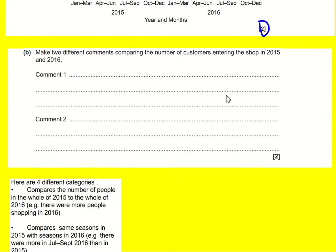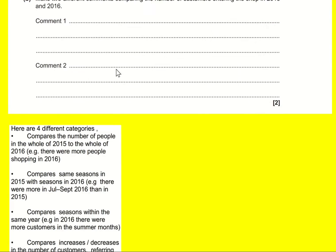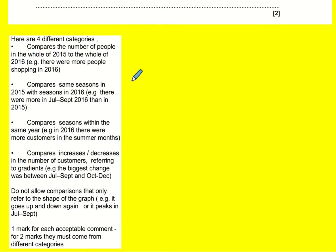And January to March is the lowest in both cases. From the mark scheme, you can compare the total number in the whole of 2015 to the whole of 2016 — more people in 2016. You can compare the seasons, or compare seasons within the same year. More customers in the summer months, you can compare increases and decreases.